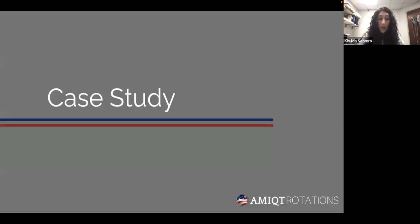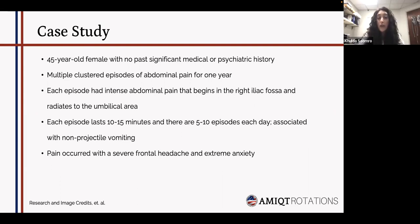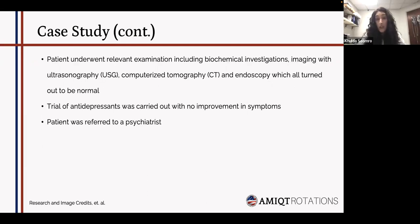For this case study, a 45-year-old female with no past significant medical or psychiatric history presented with multiple clustered episodes of abdominal pain for one year. Each episode involved intense abdominal pain in the right iliac fossa radiating to the umbilical area, lasting 10 to 15 minutes, with 5 to 10 episodes per day — which is notably different from typical epilepsy. The patient underwent biochemical examinations, ultrasonography, CT, and endoscopy, all of which came back normal.